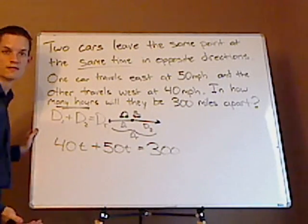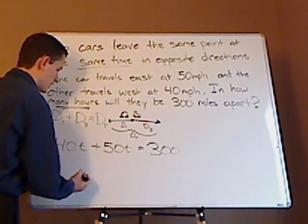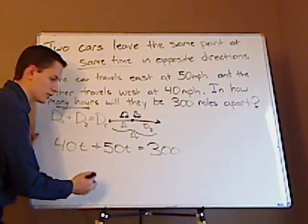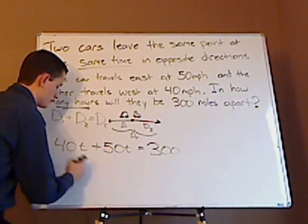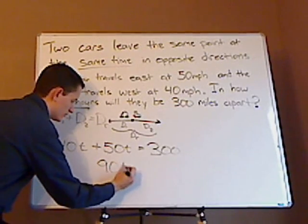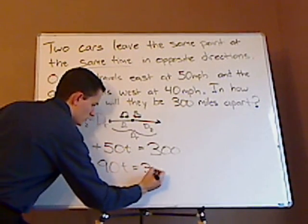All right, and then you just solve for T. So you add these two together, 40T plus 50T, that's adding like terms, so 40 plus 50 is 90. Keep the term, equals 300.